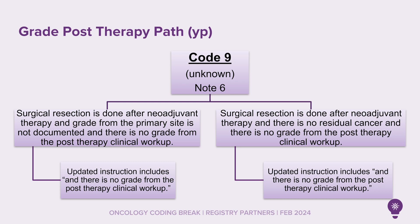Next, we have a note 6 update for code 9 of grade post-therapy path (YP). Surgical resection is done after neoadjuvant therapy, grade from the primary site is not documented, and there is no grade from the post-therapy clinical workup. The updated instruction adds: and there is no grade from the post-therapy clinical workup. That also applies when surgical resection is done after neoadjuvant therapy, there is no residual cancer, and there is no grade from the post-therapy clinical workup.